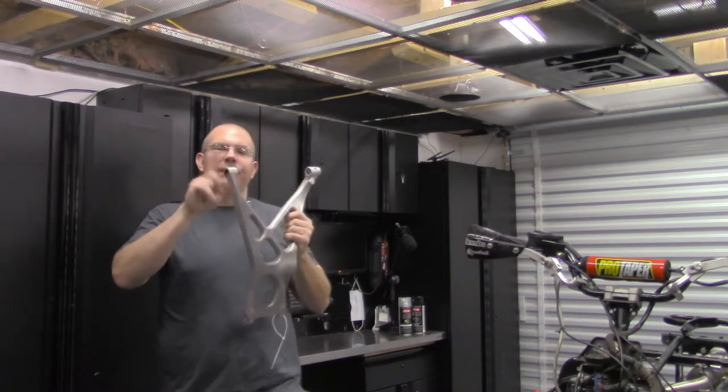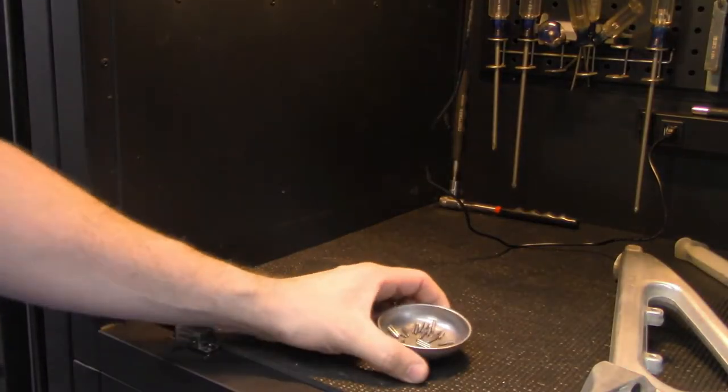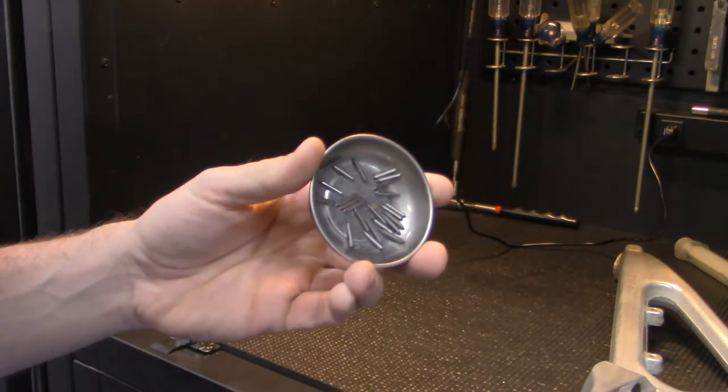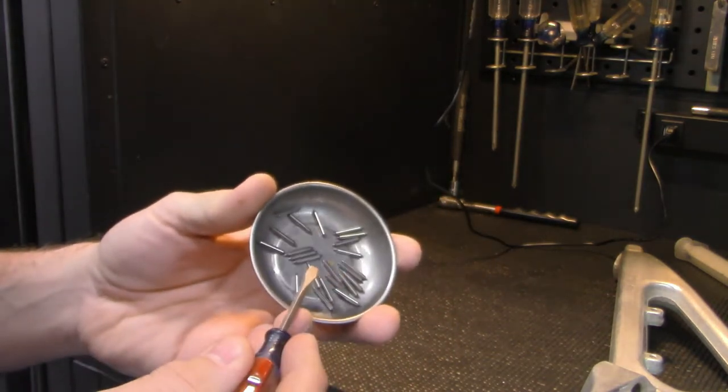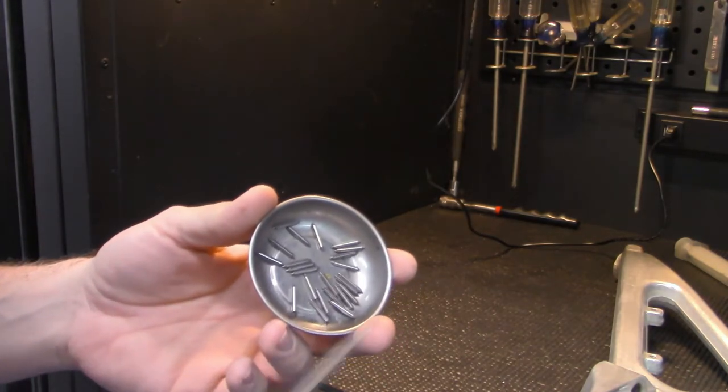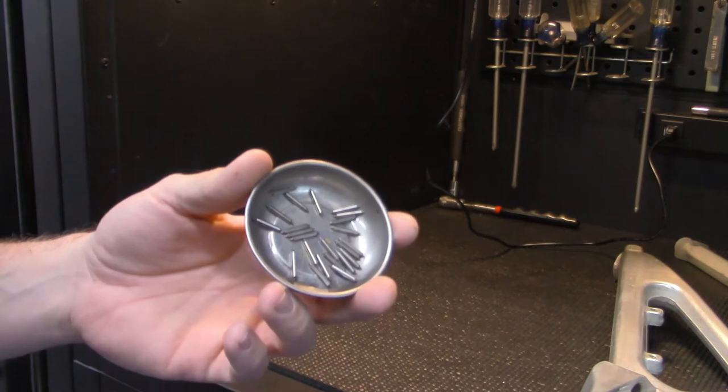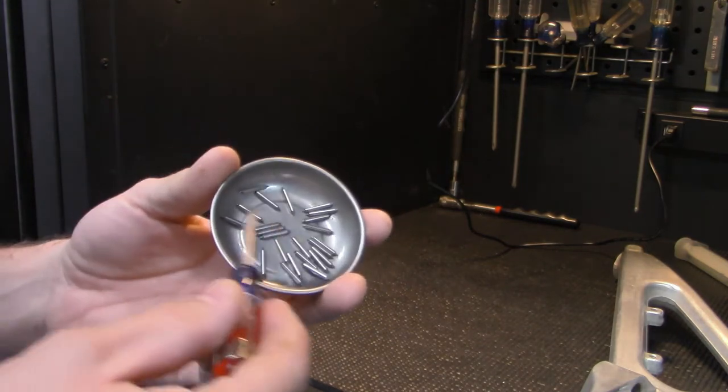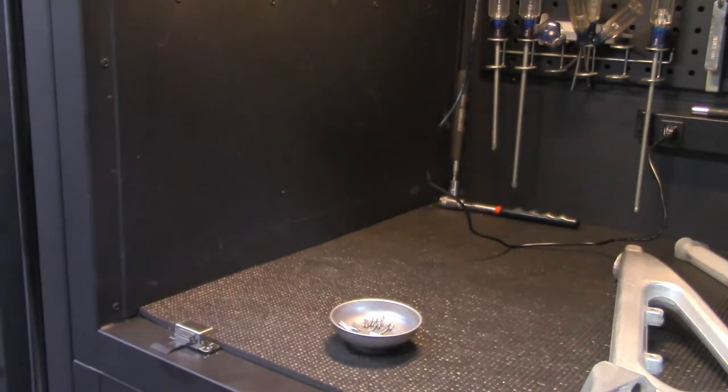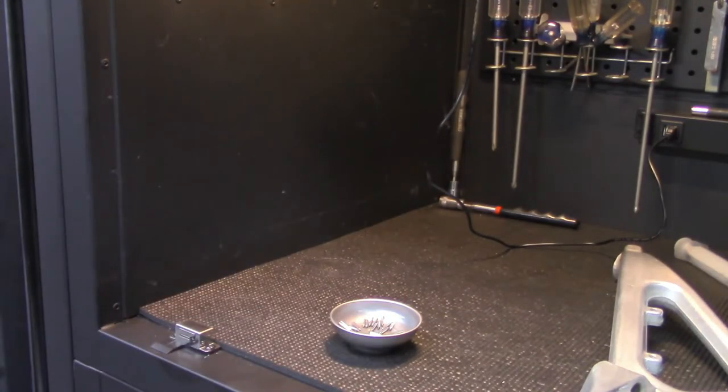We'll go ahead and put this needle bearing together. Just so y'all know, if this falls apart on your quad when you take it apart, do not lose these needles. There's 23 of these. This is probably the only video on the internet on how to do this if this happens to you. After we get these needles back reinstalled, I'm going to grease them, and then we're going to put our bolt in to hold them flush.